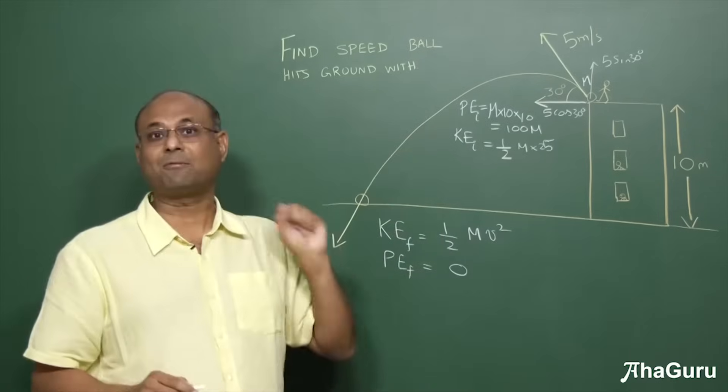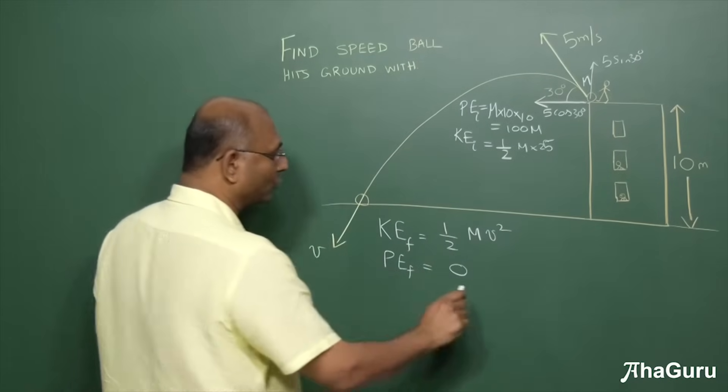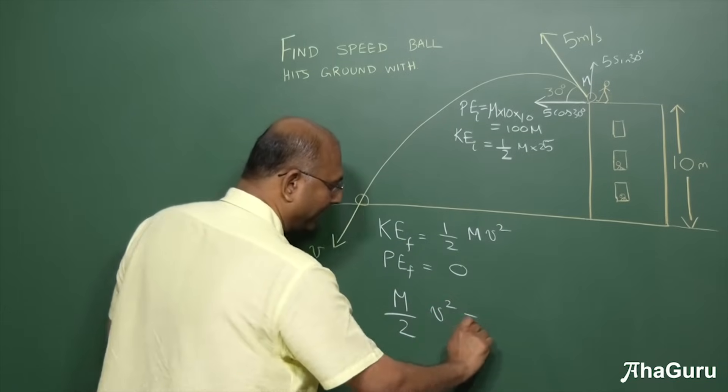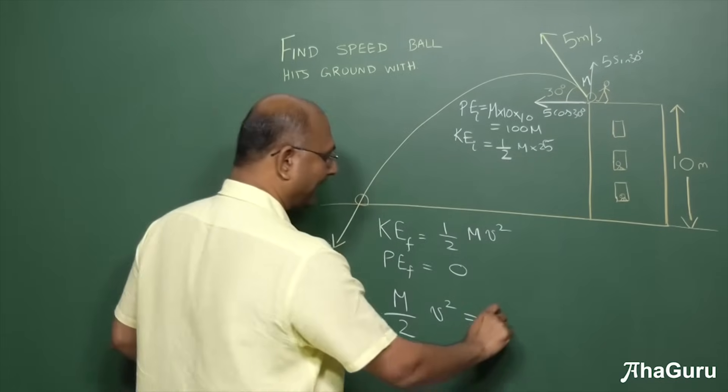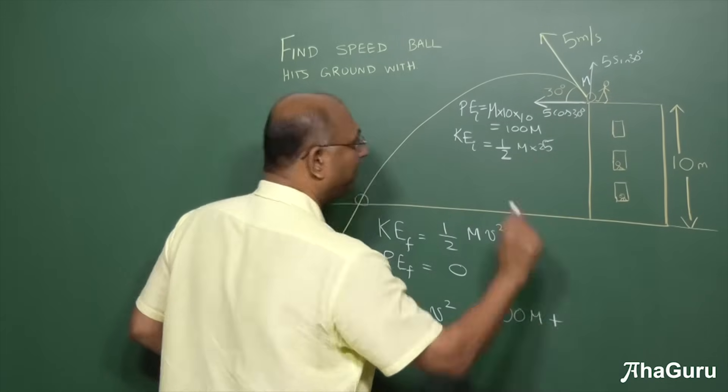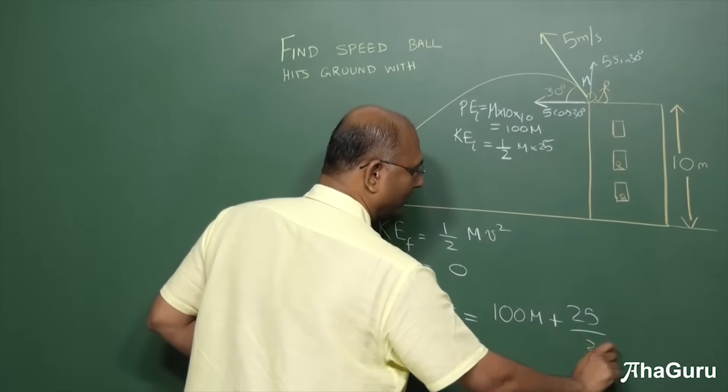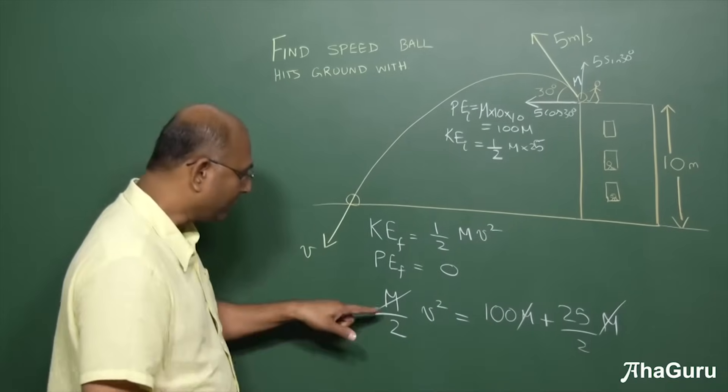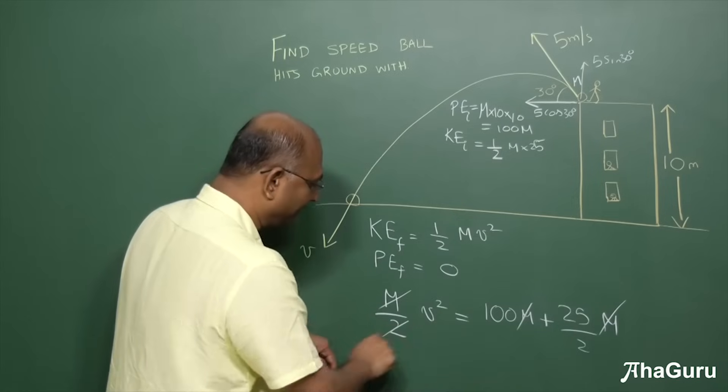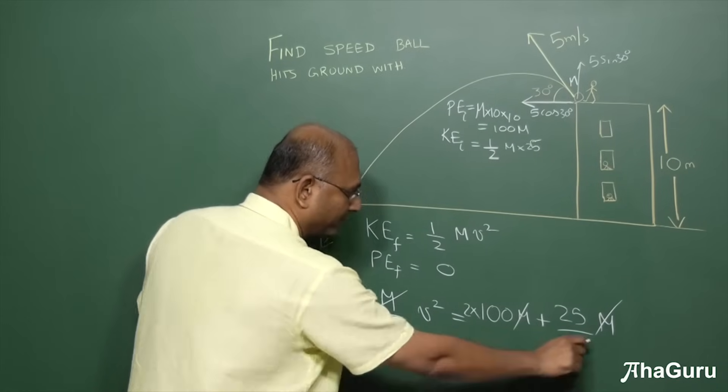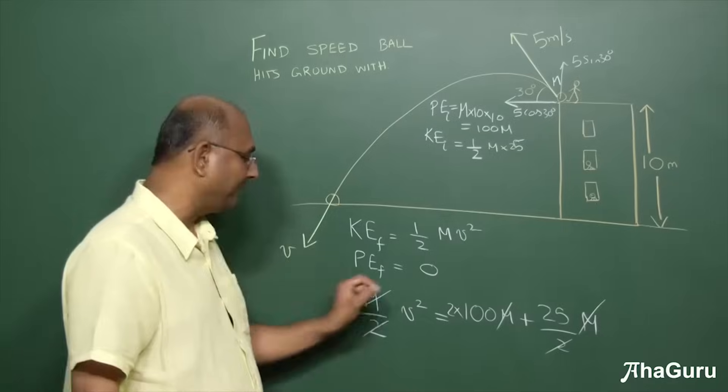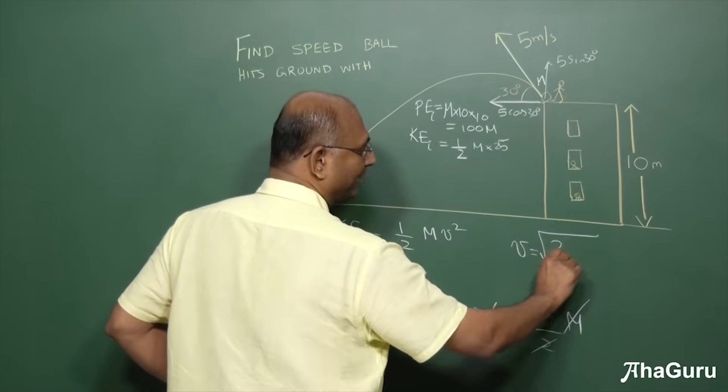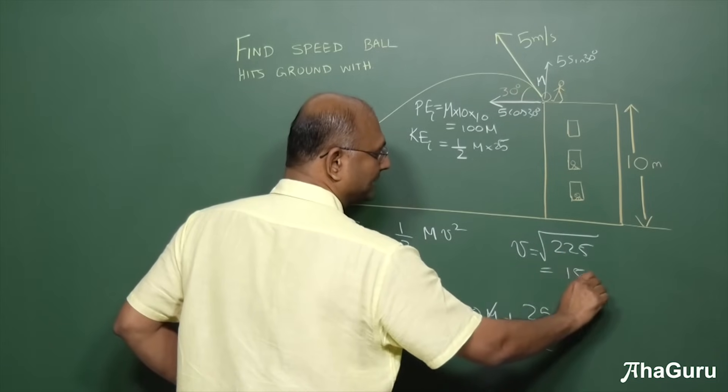Now you know that the total initial energy must be total final energy. So if we equate the two, then this is the total which is M by 2 V square. And that must be equal to 100 times M plus 25 by 2 times M. I can cancel out the M and cross multiply by 2. You will see that this 2 goes there. So if I cancel this out and put a 2 in 2. So what do you get here? 225 is V square. And so that means V is root of 225 which is 15 meters per second.